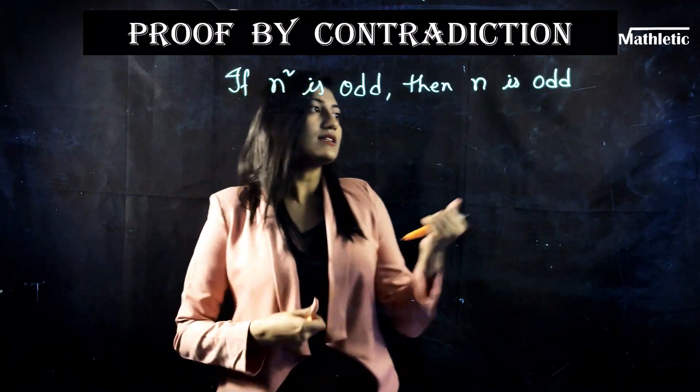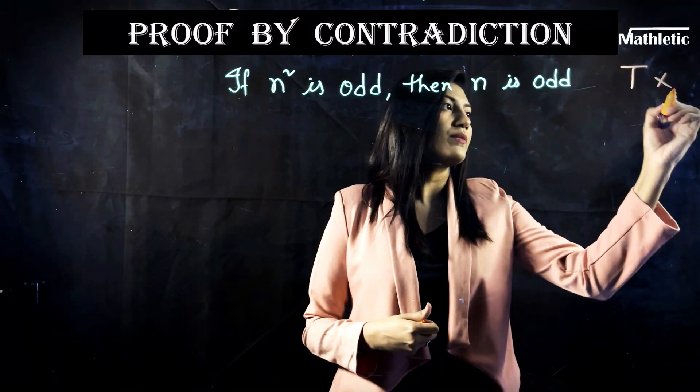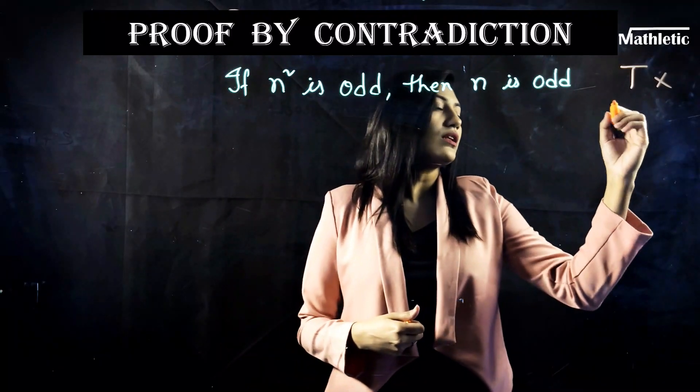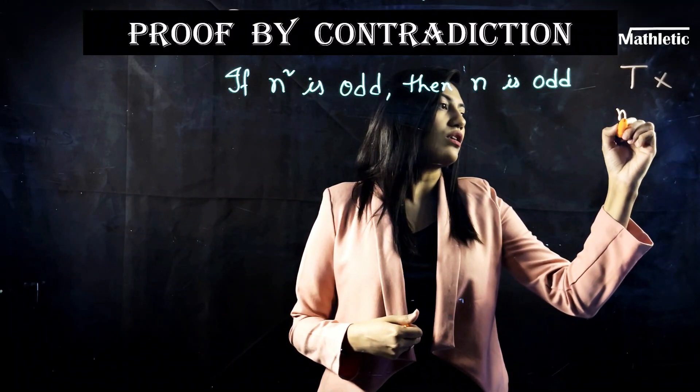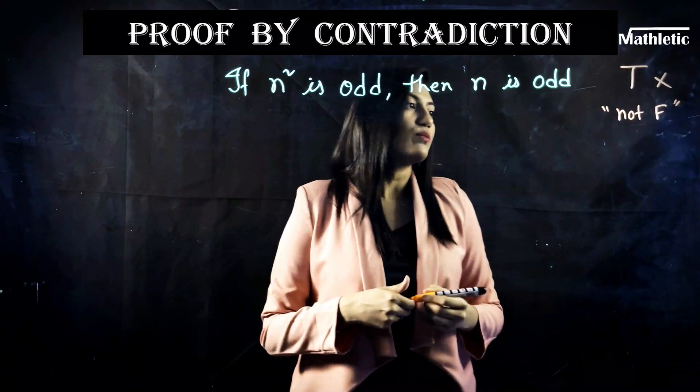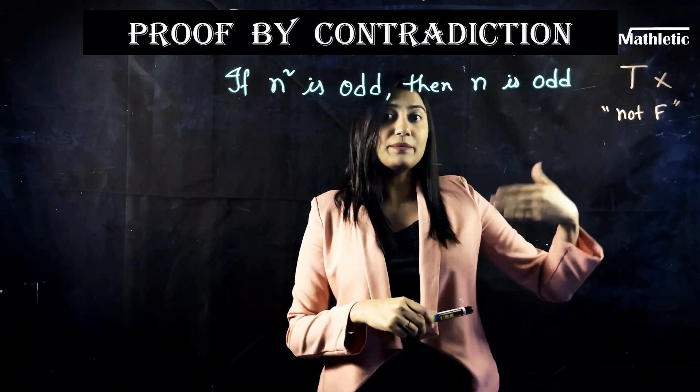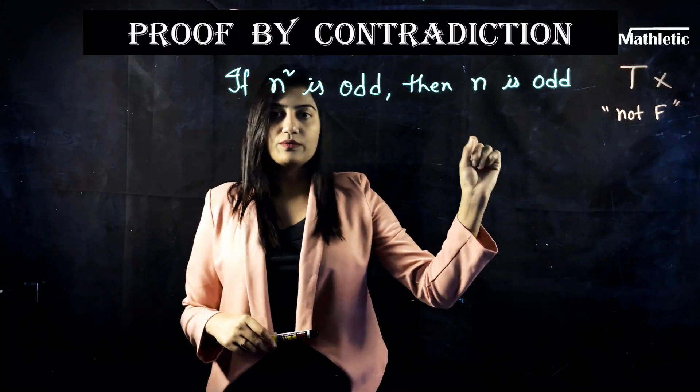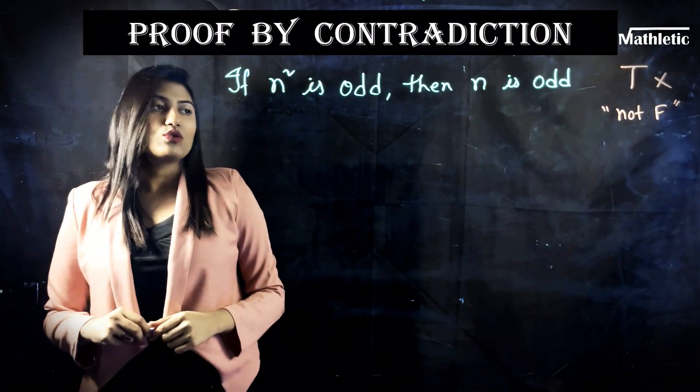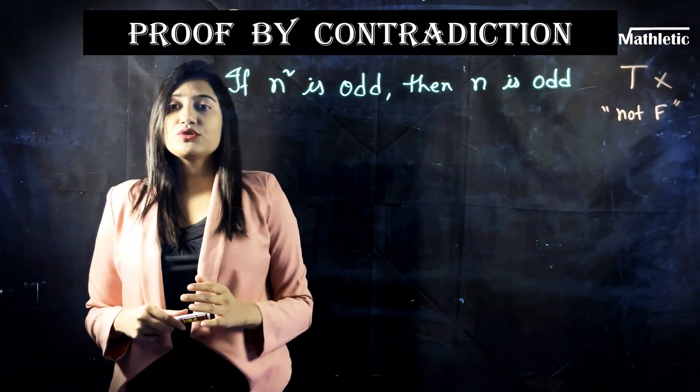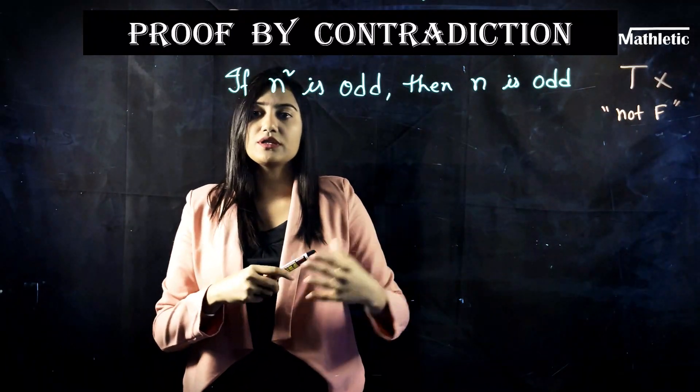So instead of proving that this statement is true, we will prove that the statement is not false. Proving that this is not false actually means that the statement is true, the statement is correct. So for that, the first step is to assume whatever they are saying, you need to assume the opposite.